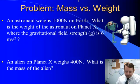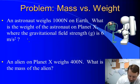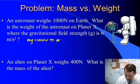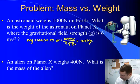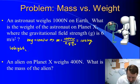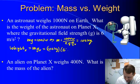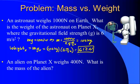Sample problem: an astronaut weighs 1,000 newtons on Earth. What is the astronaut's weight on planet X, where the gravitational field strength g is 6 meters per second squared? On Earth, weight = mg = 1,000 newtons, so mass = 1,000 / 9.8 ≈ 102 kilograms. On planet X, weight = mass × g_X = 102 kg × 6 m/s² ≈ 612 newtons. This illustrates that weight varies with the gravitational field while mass remains constant.